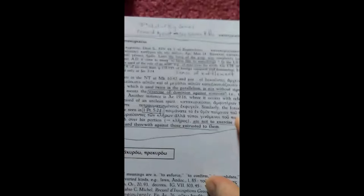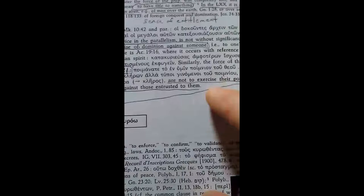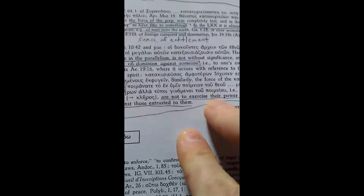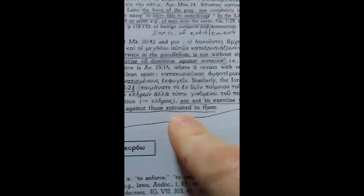Similarly, the force of the kata may still be seen in 1 Peter 5:2. That is, the elders, each over his portion, are not to exercise their power for themselves, and therewith against those entrusted to them, or to exercise power over the people entrusted to them.